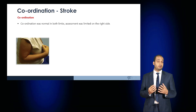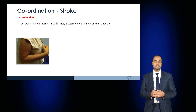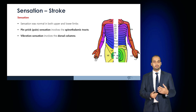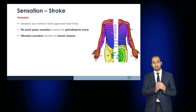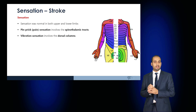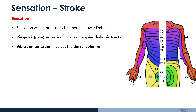In stroke, coordination assessment can be difficult due to limited movement. Sensation can be affected or normal depending on where cerebral damage has occurred. Pinprick sensation assesses the spinothalamic tracts and vibration sense assesses the dorsal columns. Key dermatomes that can be assessed include C5 — the sergeant's patch — C6 the thumb, C7 the middle finger, C8 the small finger, and T1 and T2 assessed with the medial forearm and arm respectively.